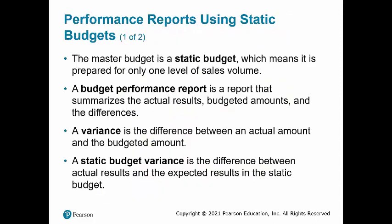A static budget is a budget prepared for only one level of sales volume. A static budget doesn't change after it is developed. A budget performance report is a report that summarizes the actual results, budgeted amounts, and the differences.